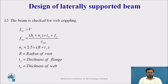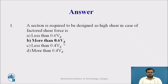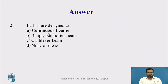This is how we design a laterally supported beam subjected to low shear or high shear. Review questions: A section is required to be designed as a high shear case when the factored shear force is more than 0.6 Vd. Purlins are designed as continuous beams.